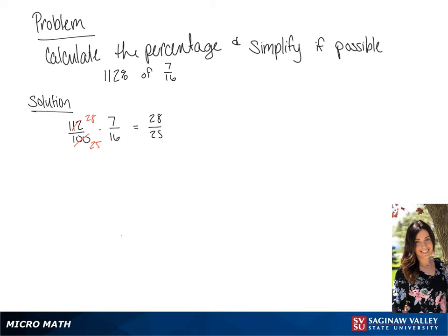So we have 28 over 25 times 7 over 16. We can further simplify this with the 28 and 16, so we will have 7 and 4. So now we have 7 over 25 times 7 over 4. And for our final answer, we get 49 over 100.